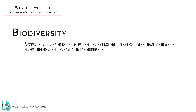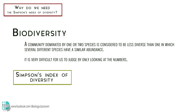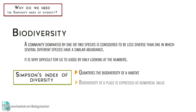Sample B is therefore considered to be less diverse than sample A. A community dominated by one or two species is considered to be less diverse than one in which several different species have a similar abundance. However, it is very difficult to judge by only looking at the numbers. That is why we need to calculate the Simpson's Index of Diversity for both habitats. It quantifies the biodiversity of habitats and gives us a numerical value to represent the diversity of the place, so a valid comparison can be made. Most importantly, Simpson's diversity index takes into account both richness and evenness.